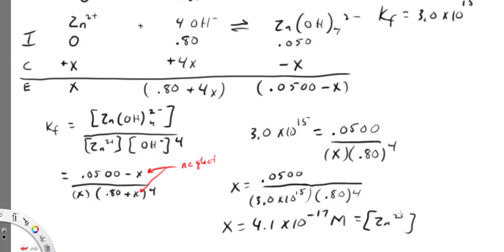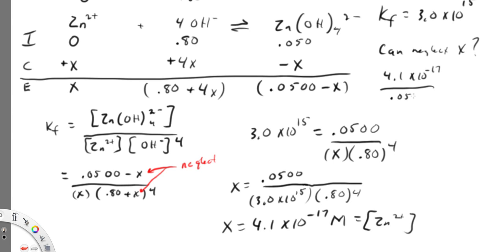Can we neglect x? Well, 4.1 times 10 to the minus 17th divided by our smallest value, 0.050, times 100 — that's going to be way less than 5%, so yes, we can neglect x.